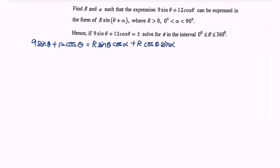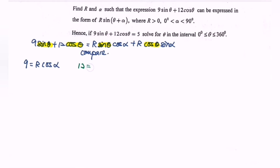Next is to compare the situation. We compare the coefficients of sin(θ) and cos(θ). So 9 = r·cos(α) and 12 = r·sin(α).